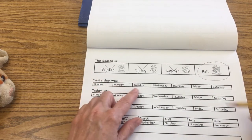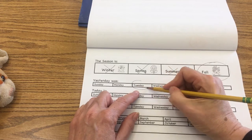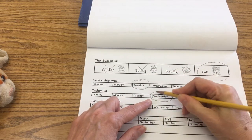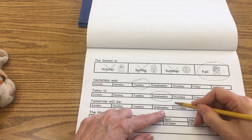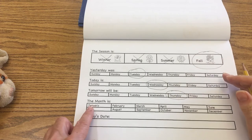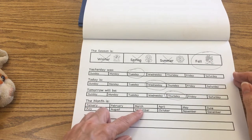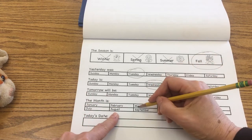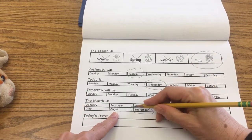Yesterday was Tuesday. Today is Wednesday. And tomorrow will be Thursday. And then the month is not January, not February, not March, not April, not May, not June, not July, not August. But yes, September. We get to circle September.